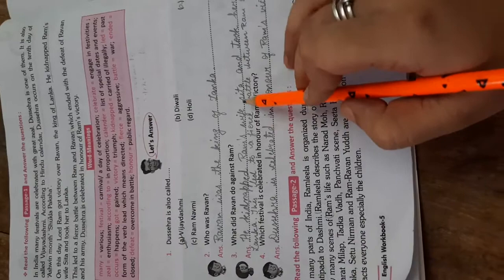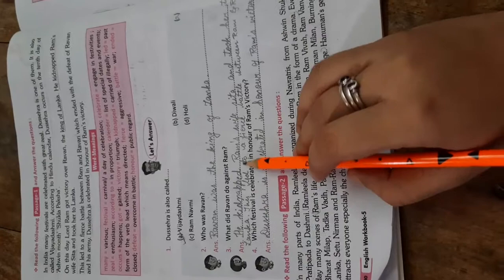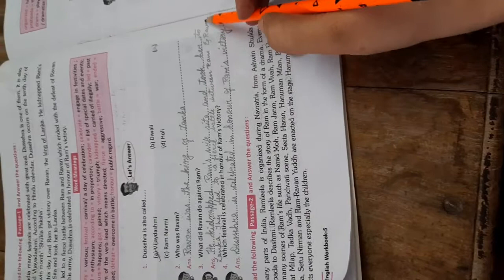What did Ravan do against Ram? He kidnapped Ram's wife Sita and took her to Lanka. This leads to a serious battle between Ram and Ravan.